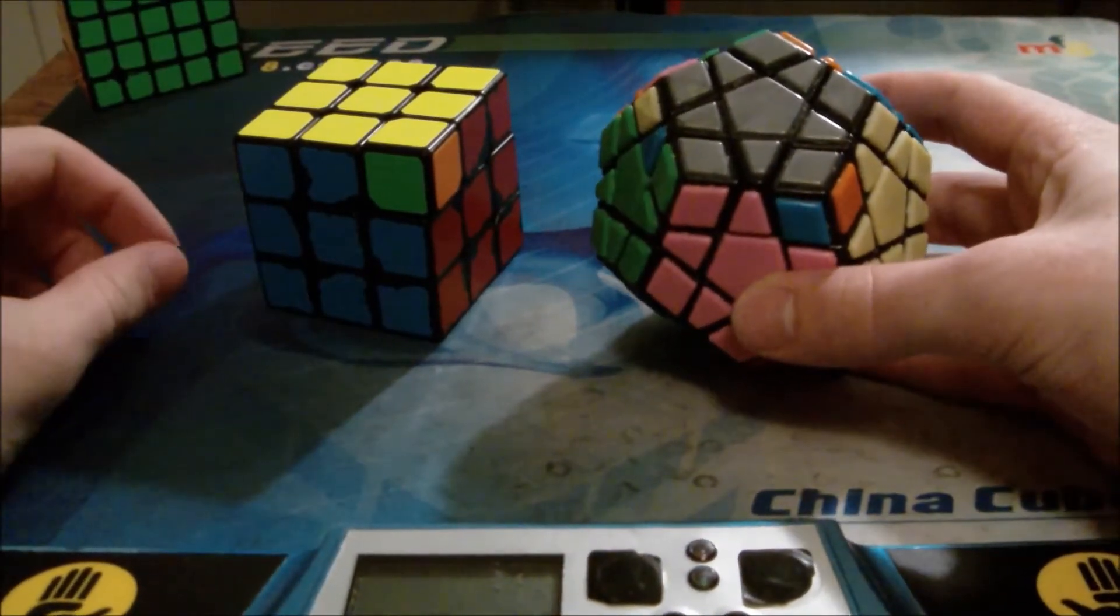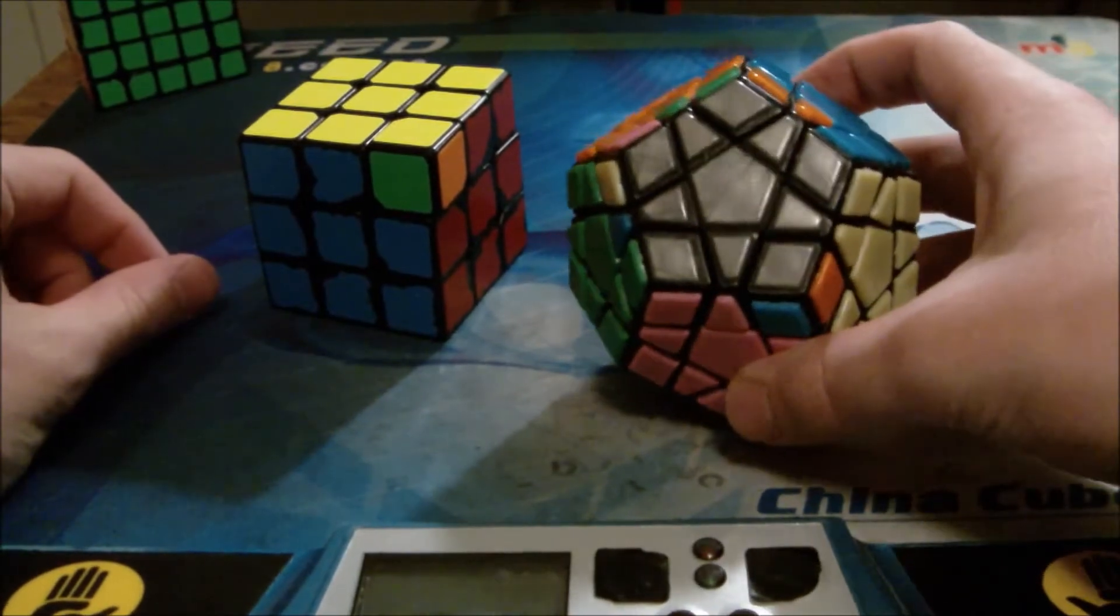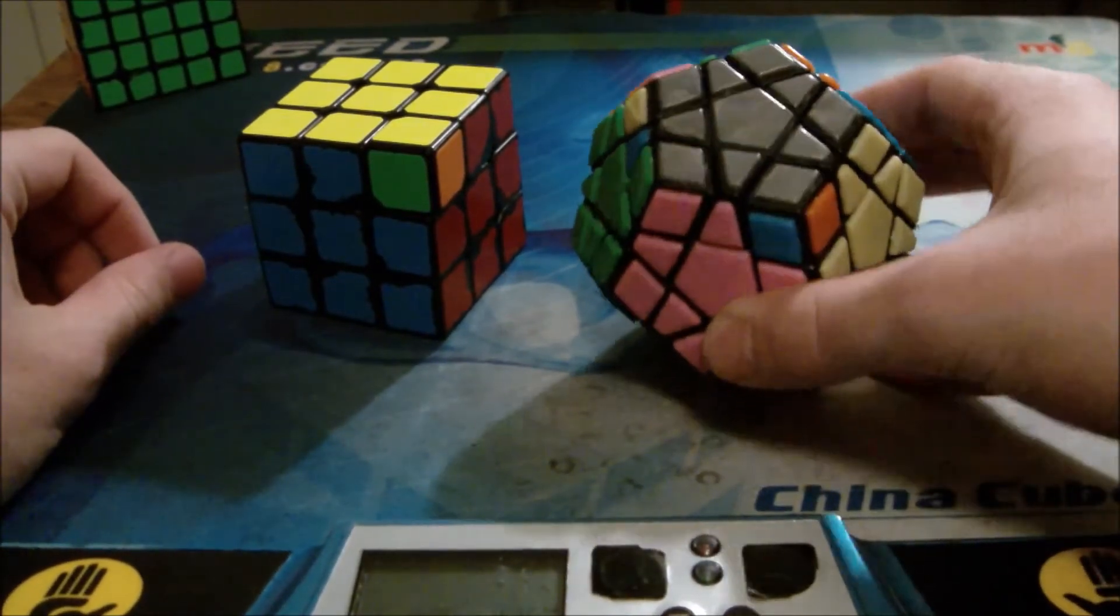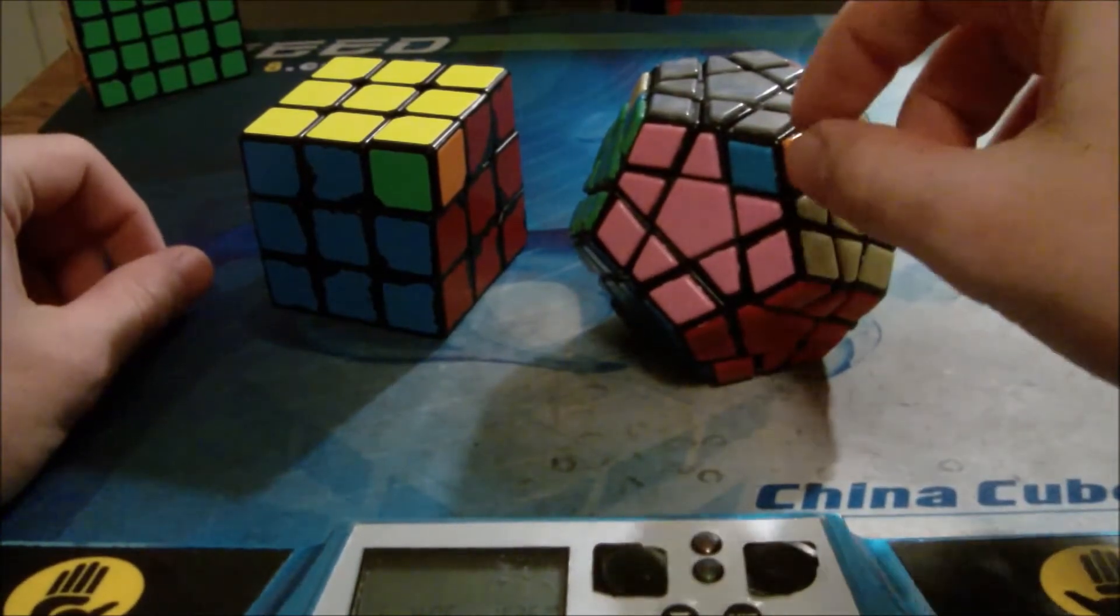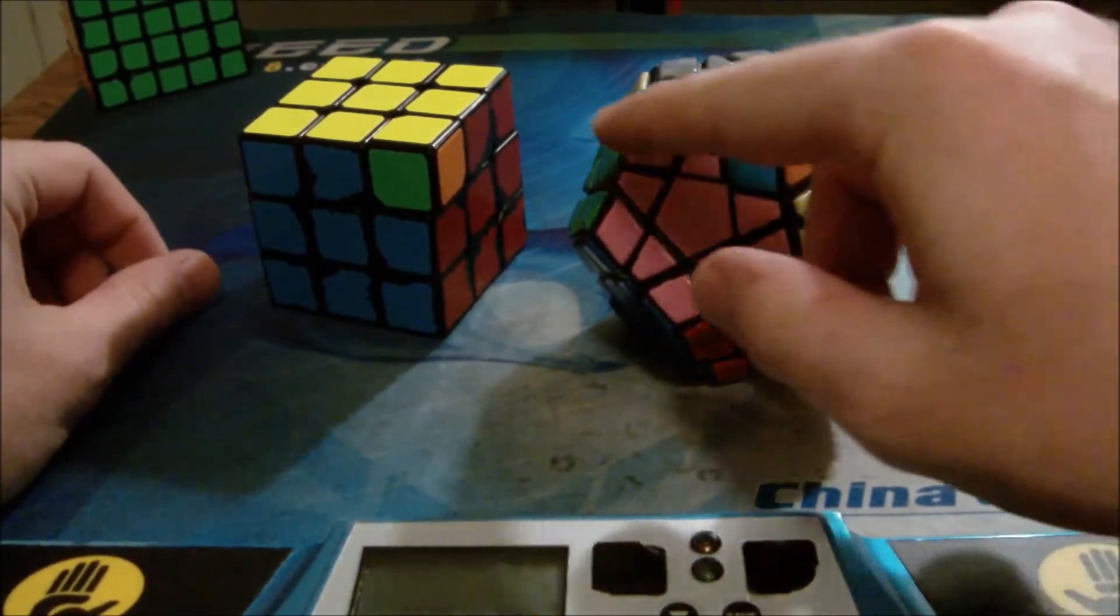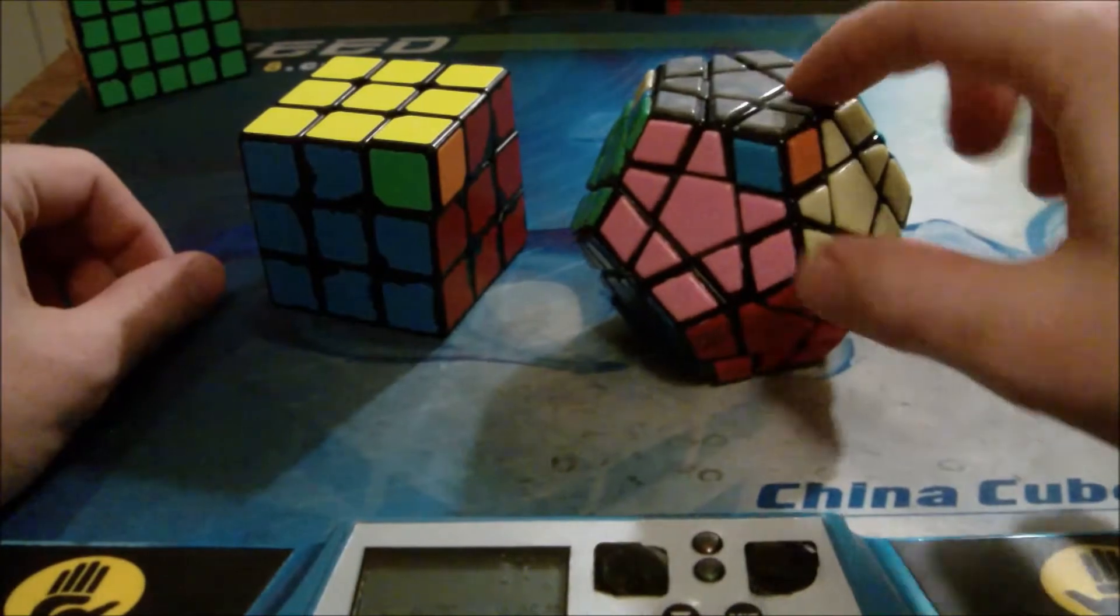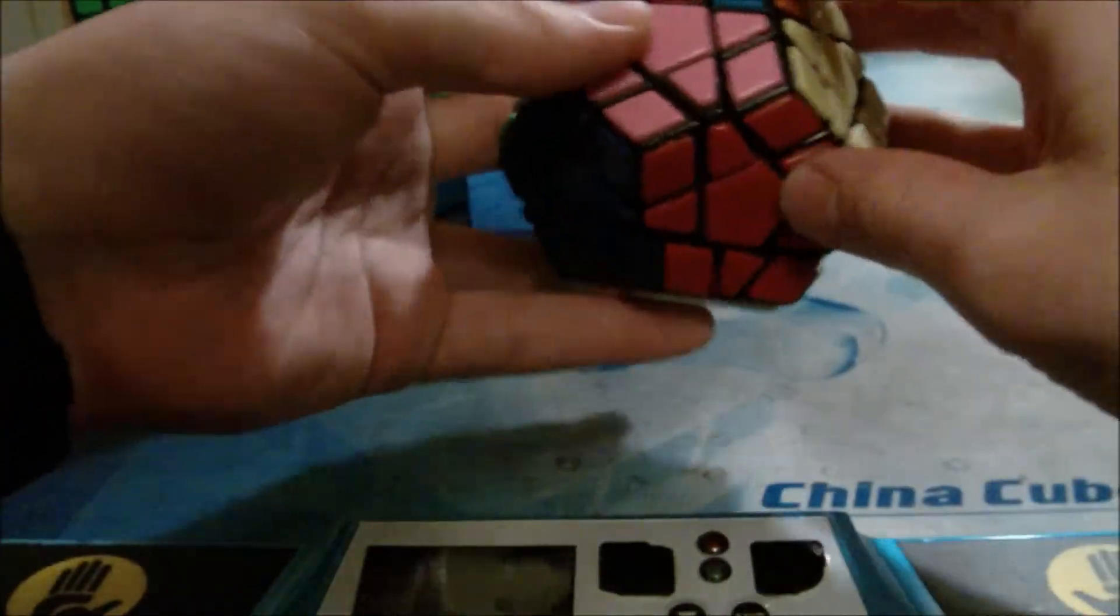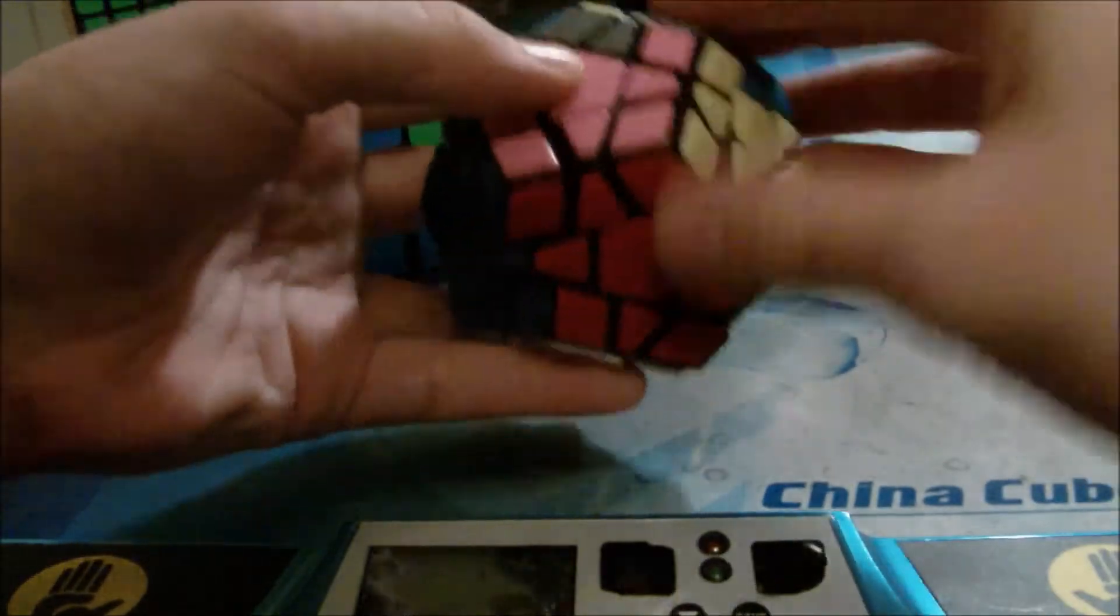This is the normal Y-perm. So you just hold it like a normal Y-perm on 3x3, with these two bars in the front right, and then just do a Y-perm.